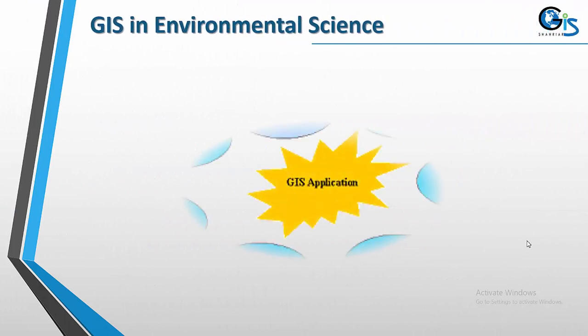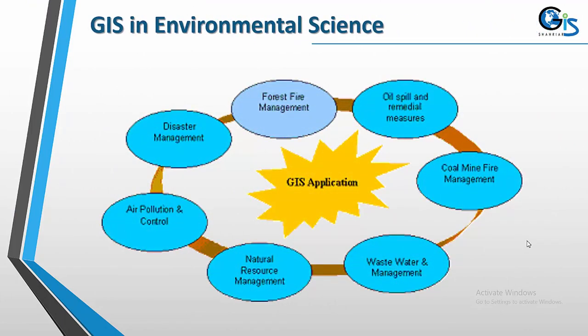In the environmental sector, already 80 percent of environmental science experts are using GIS in their projects. Examples include forest fire management, oil spill and remedial measures, coal mine fire management, wastewater management, natural resource management, air pollution control, disaster management, and many more.